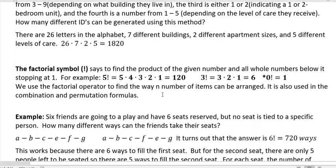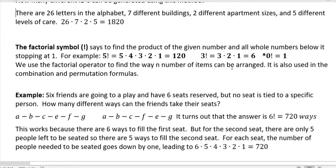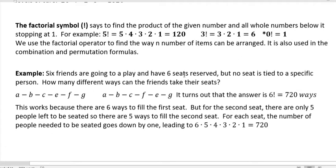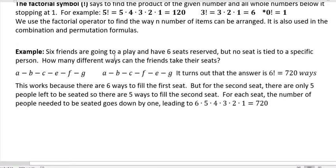We use the factorial operator to find the way n numbers of items can be arranged. It can also be used in combination and permutation formulas. So let's look at an example where we use the factorial symbol and why that works. So let's say six friends are going to a play and they have six seats reserved, but no seat is tied to a specific person. How many different ways can the friends take their seats?